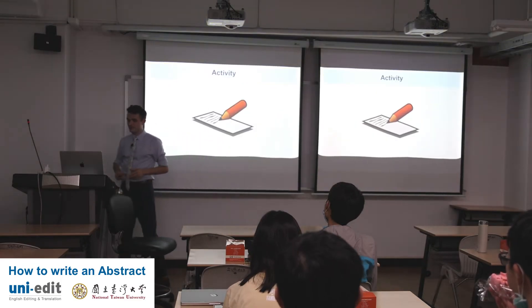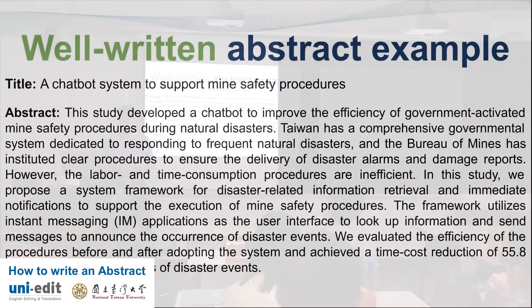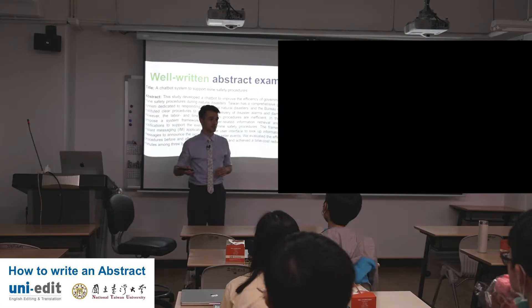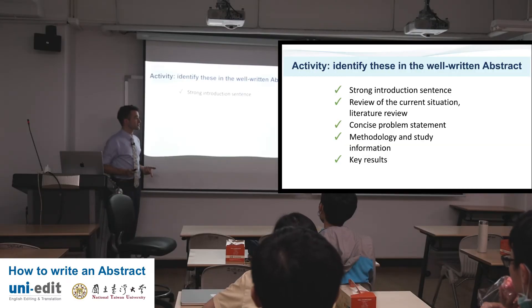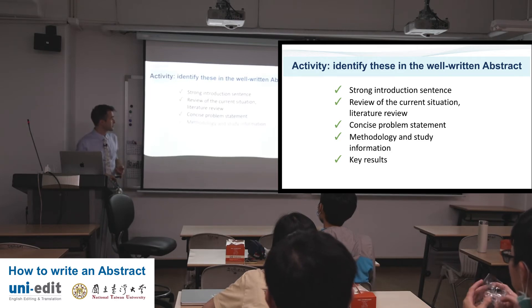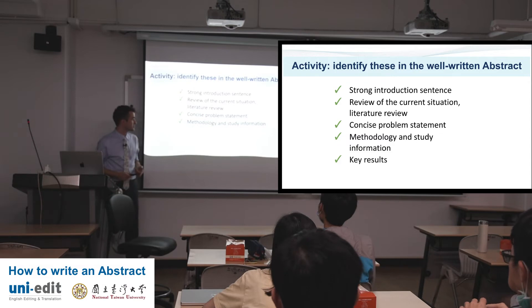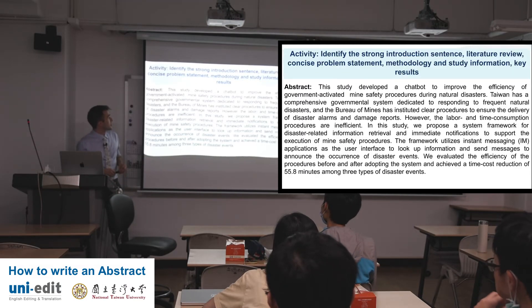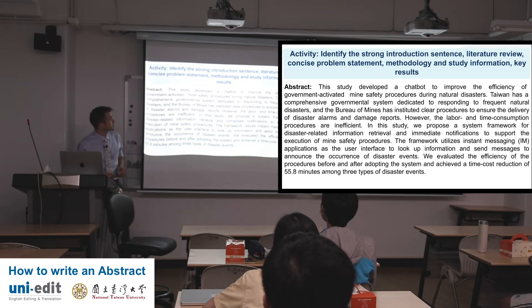Let's jump in with an activity. Here's a well-written abstract example — similarly, we're going to identify the parts: a strong introduction section, a review of the current situation or literature review, a concise problem statement, methodology and study information, and key results. Let's start with number one: identify the strong introduction sentence.